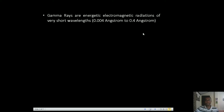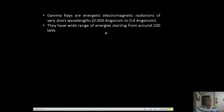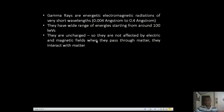Because gamma rays are nothing but beams of energetic photons, they have high penetration power and can travel through matter. They have a wide range of energy starting from around 100 keV. Technically speaking, there is no upper range of energy of gamma ray photons. They are not affected by electric and magnetic fields.